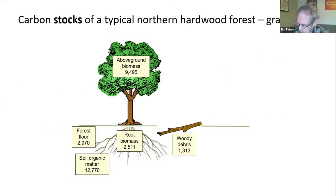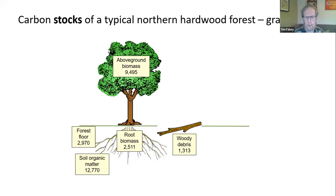This is the carbon stock for a typical northern hardwood forest — the Hubbard Brook Experimental Forest, a fairly typical second-growth hardwood forest heavily logged in 1910, so it's over 90 years old. About half of the carbon is in the living trees — around 9,000 grams of carbon per square meter — and another 2,500 grams of carbon in the roots. A little over half of the carbon in the forest is in the soil, either on the surface in the organic forest floor or down in the mineral soil, and there's always some slowly decaying woody debris.